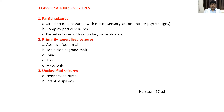The next class is primarily generalized seizure. This includes absence seizure, also known as petit mal seizure; tonic-clonic seizure, also known as grand mal seizure — these names should not be confused. Then we have tonic seizure, atonic seizure, and myoclonic seizure. The third class is unclassified seizure, which includes neonatal seizure and infantile spasms.